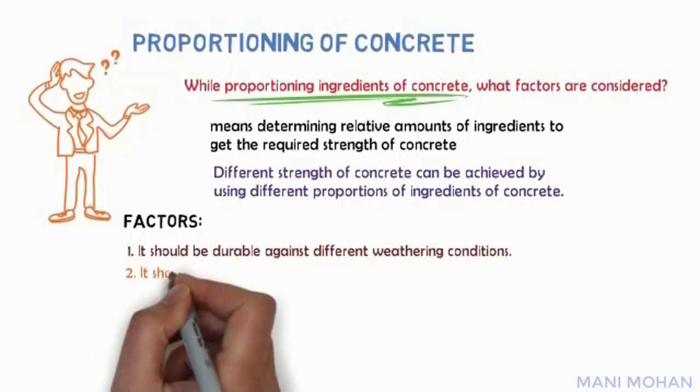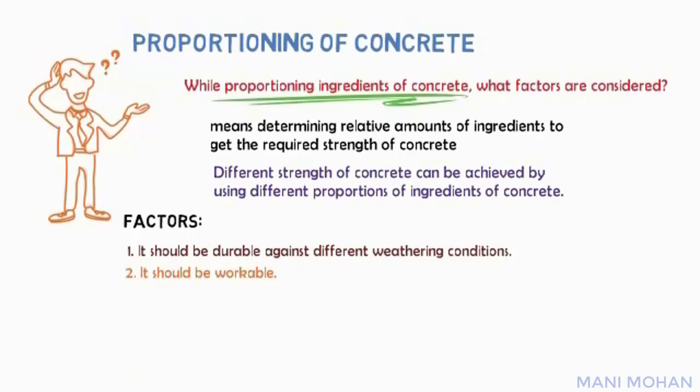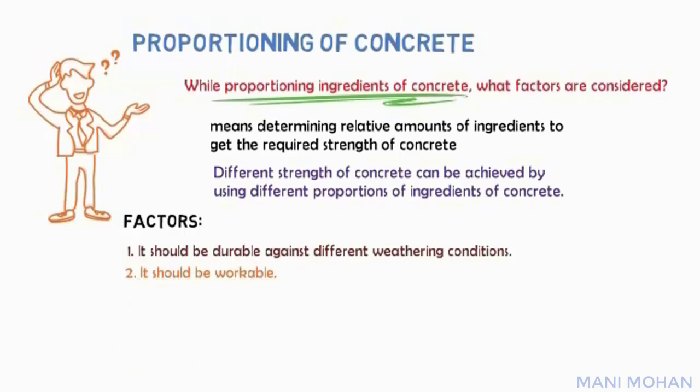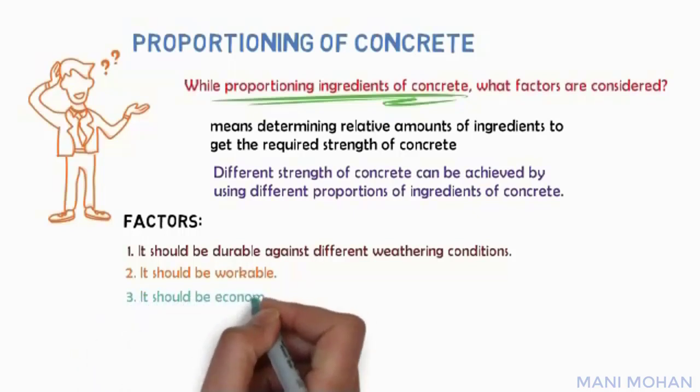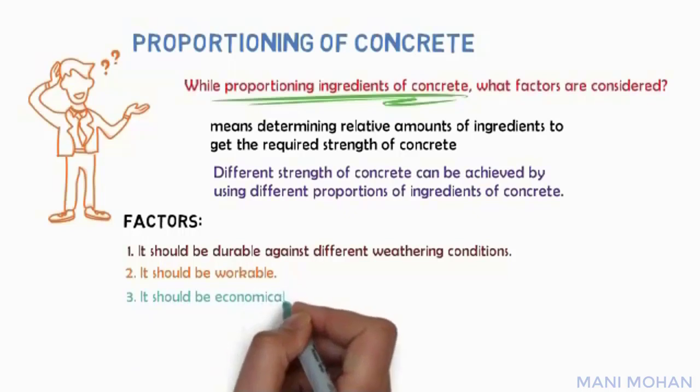Second, it should be workable — that is, it should be possible to get it easily mixed, placed, and compacted to obtain dense concrete. Third, it should be economical. Economy is essential concerning cement, as this is the costliest ingredient of concrete.